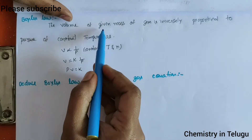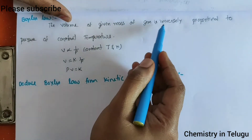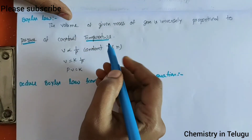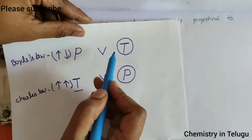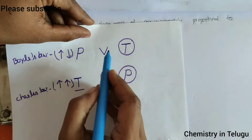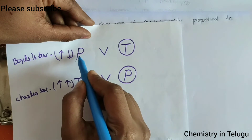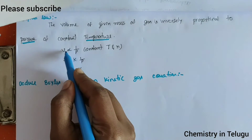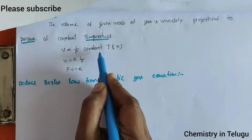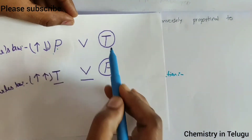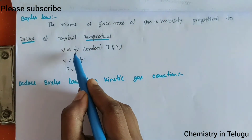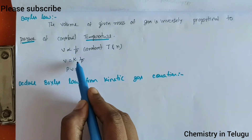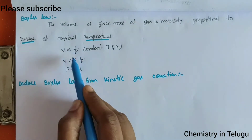The volume of a given mass of a gas is inversely proportional to the pressure at constant temperature. Pressure is inversely proportional to the volume; volume is inversely proportional to the pressure. This is at constant temperature. Volume is inversely proportional to the pressure, so here we can write constant temperature. This symbol is constant.